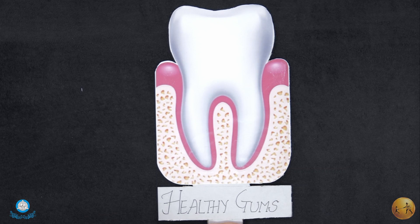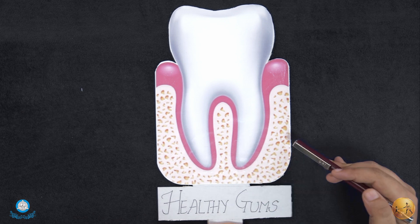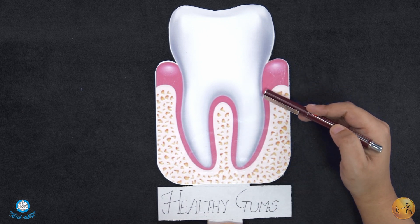Good morning. Today we will be talking about periodontal pocket. As you can see here, this is a healthy gum. This is the gingival sulcus.